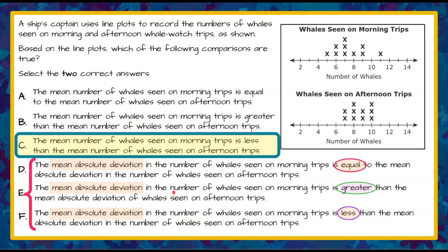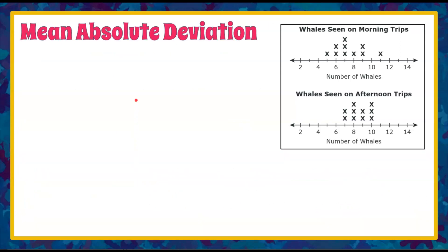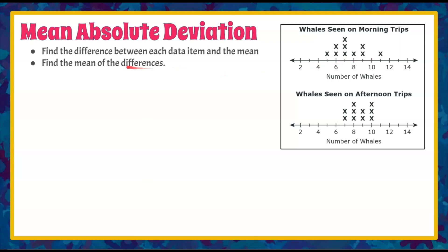Now let's find the mean absolute deviation. Students often get scared by this, but here's a very easy way to organize your data. We want to know how much each data point deviates from the mean — does the mean really represent the data? Is it variable and spread out, or is the mean a true reflection of the average number of whales? We find the difference between each data item and the mean, then find the mean of those differences. Our morning mean was 7.5 and afternoon mean was 8.6.